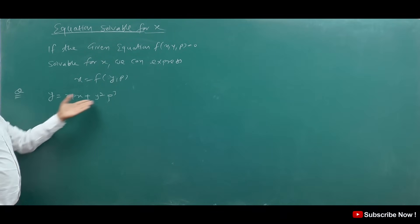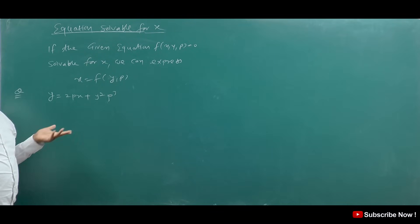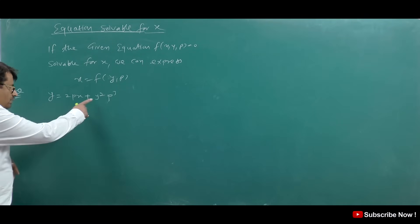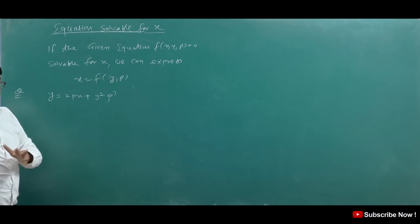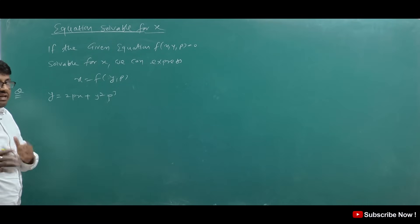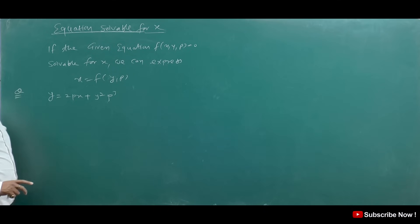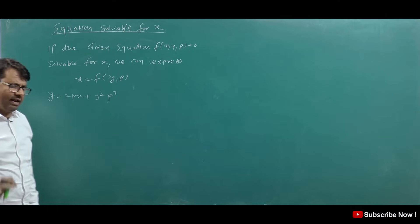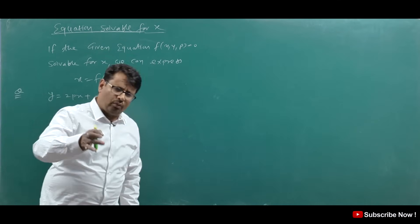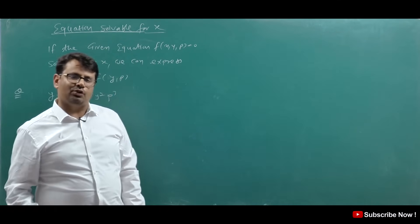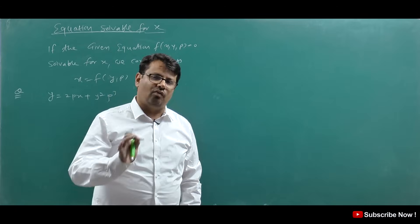You will say that if Y is written, then it is Solvable for Y. But here, Y also appears, so we can't do it with Solvable for Y. Here, X appears only once. If X is only here, then it is Solvable for X. If Y is only here, then it is Solvable for Y.